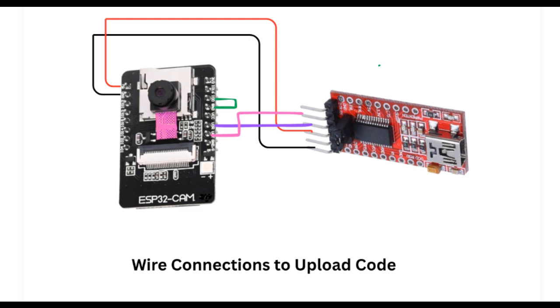When the chassis is ready, the very first thing I'm going to do is upload the code. To upload the code, we need an FTDI module.